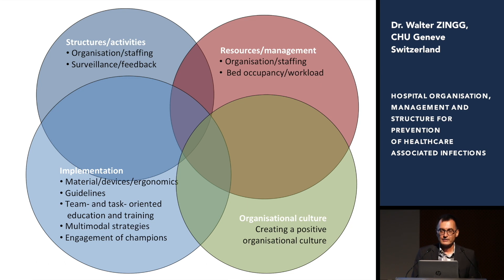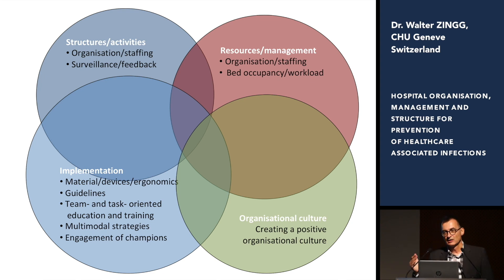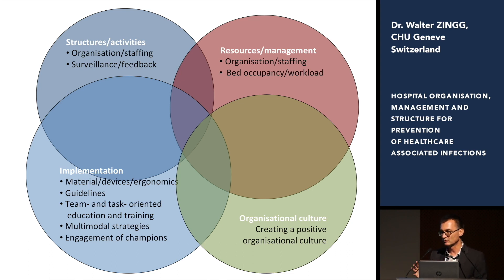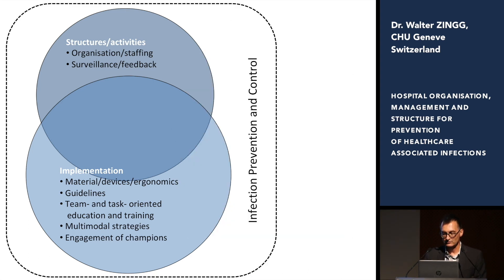Those ten key components actually address different levels in a hospital. When we did the systematic review, it was only afterwards that I realized those key components fit quite well in the structure of an organization and the different levels: implementation, structure, and activities in infection prevention and control, management, and organizational culture.